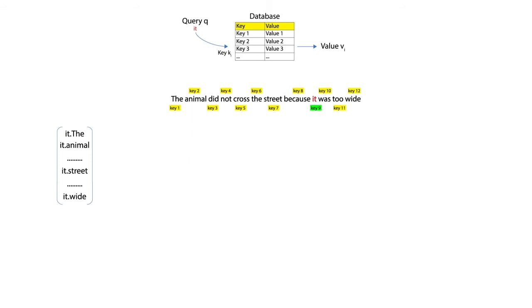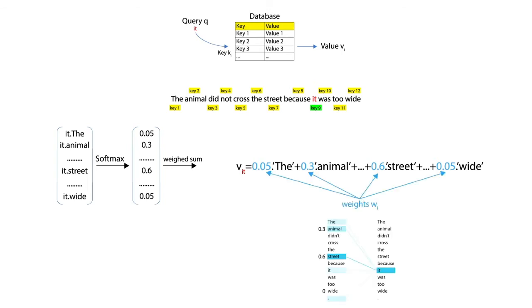Subsequently, the values of the dot product are converted to a probability distribution via a softmax operation. The value that will be returned by the dot product is called VIT, our context factor for the word IT. The dot product reveals that the word IT is likely with a probability of 60% linked to the word STREET.